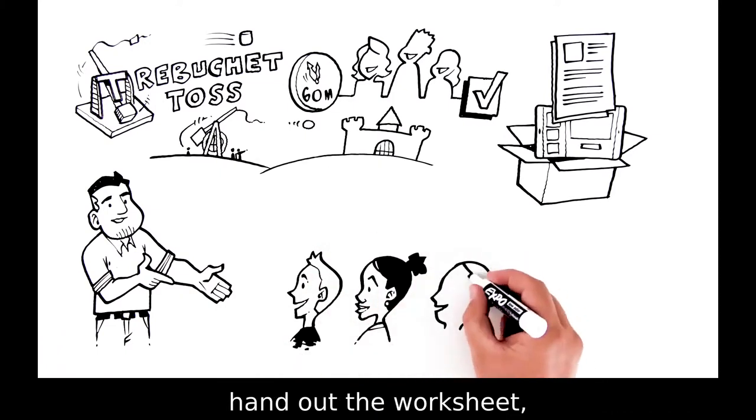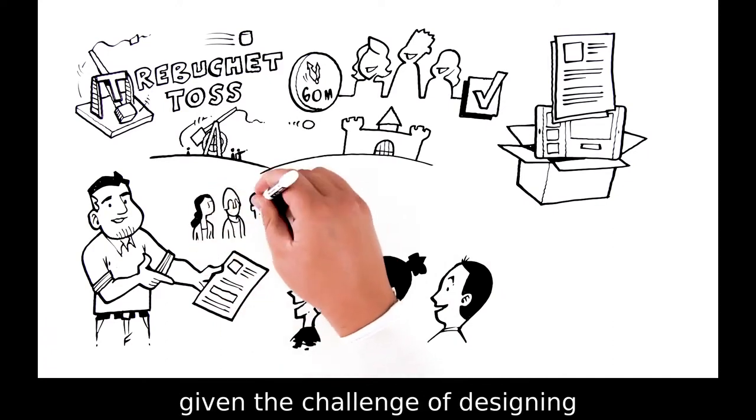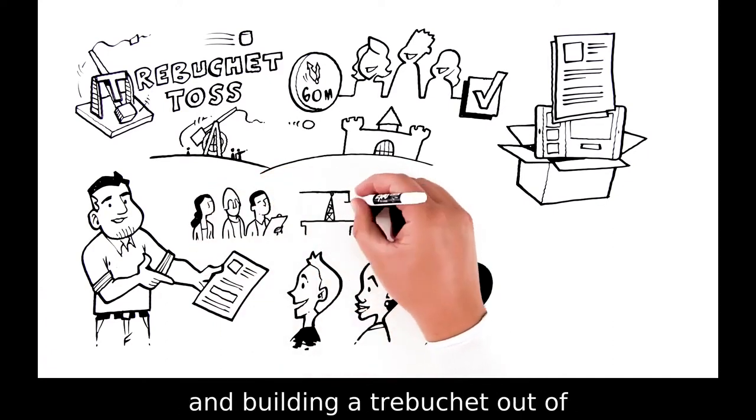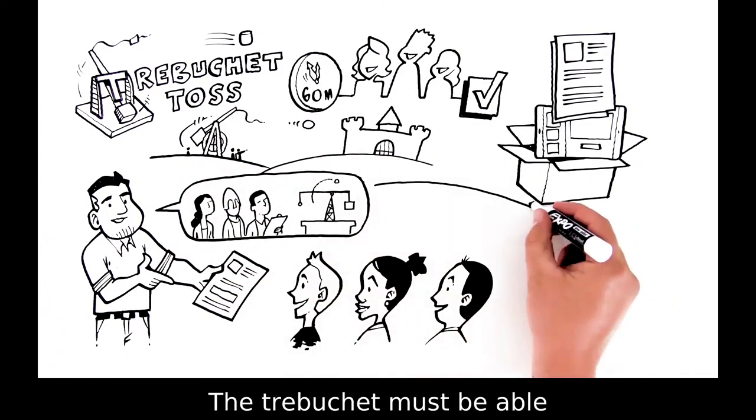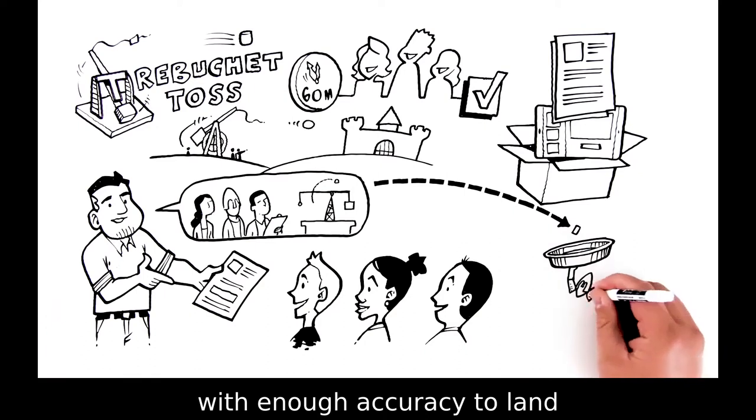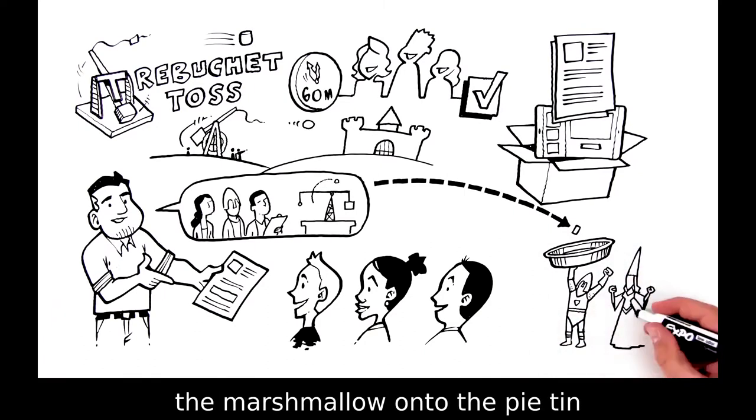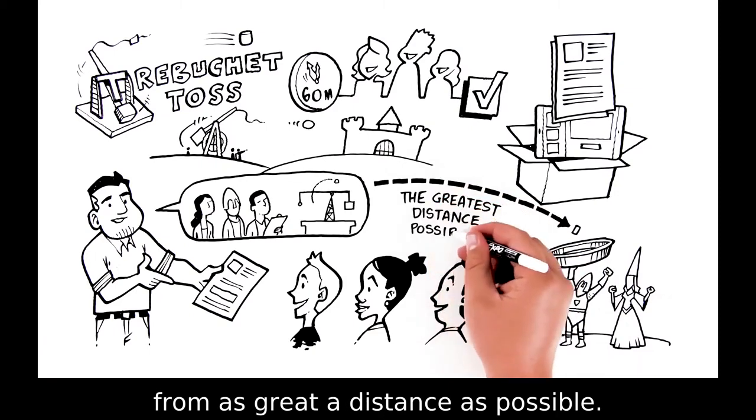Hand out the worksheet and explain the challenge. You're a team of engineers given the challenge of designing and building a trebuchet out of everyday materials. The trebuchet must be able to launch a mini marshmallow with enough accuracy to land on a pie tin. The objective is to launch the marshmallow onto the pie tin from as great a distance as possible.